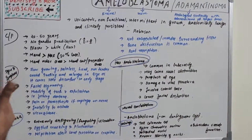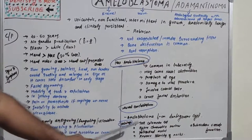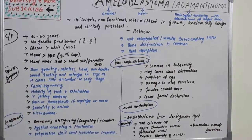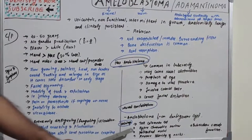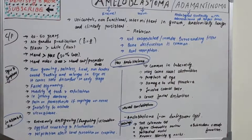The histological features include tall columnar cells with hyperchromatic, palisaded nuclei, reverse polarity of nuclei, and subnuclear vacuole formation. Now let's look at the various histological types of ameloblastoma.